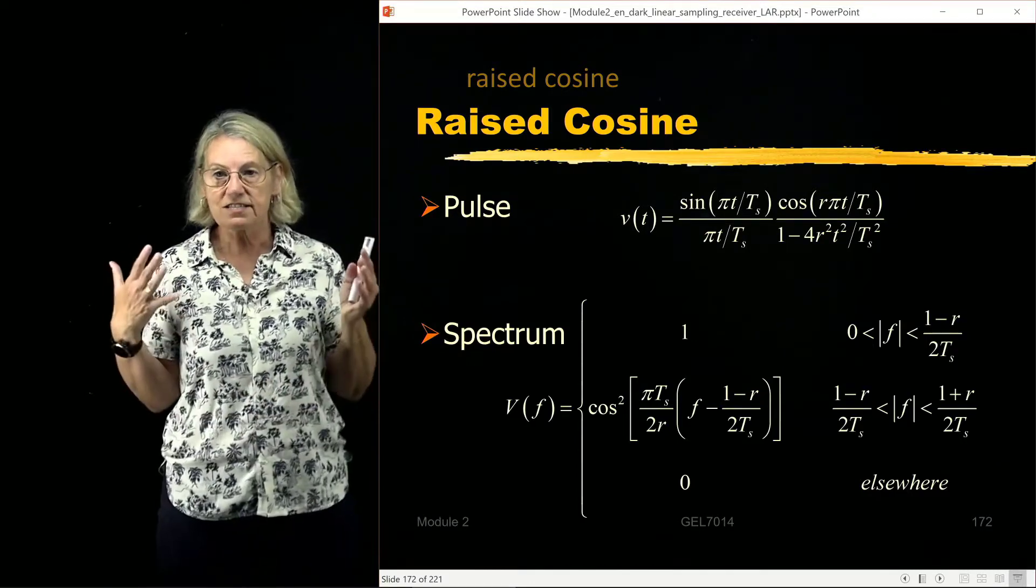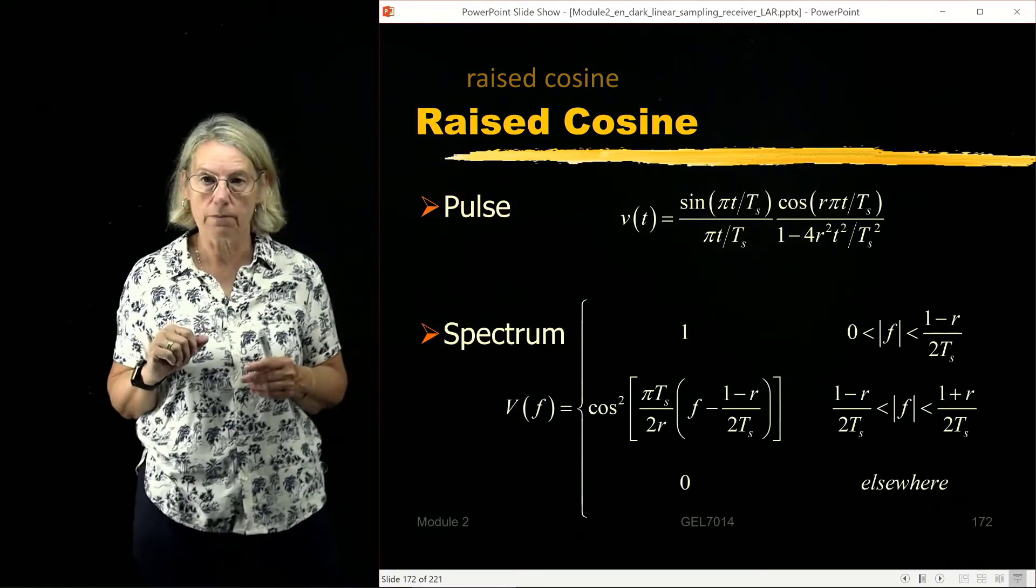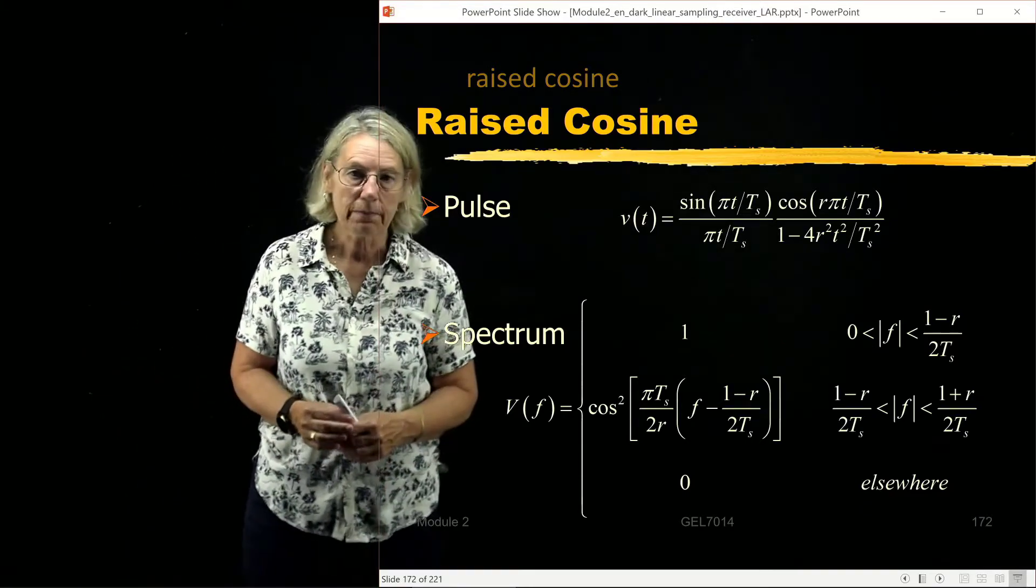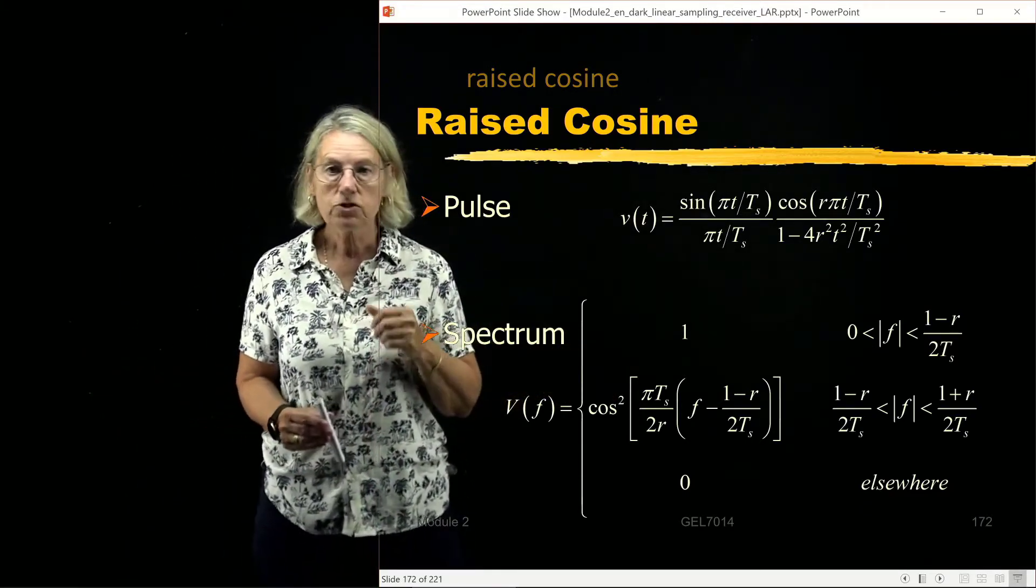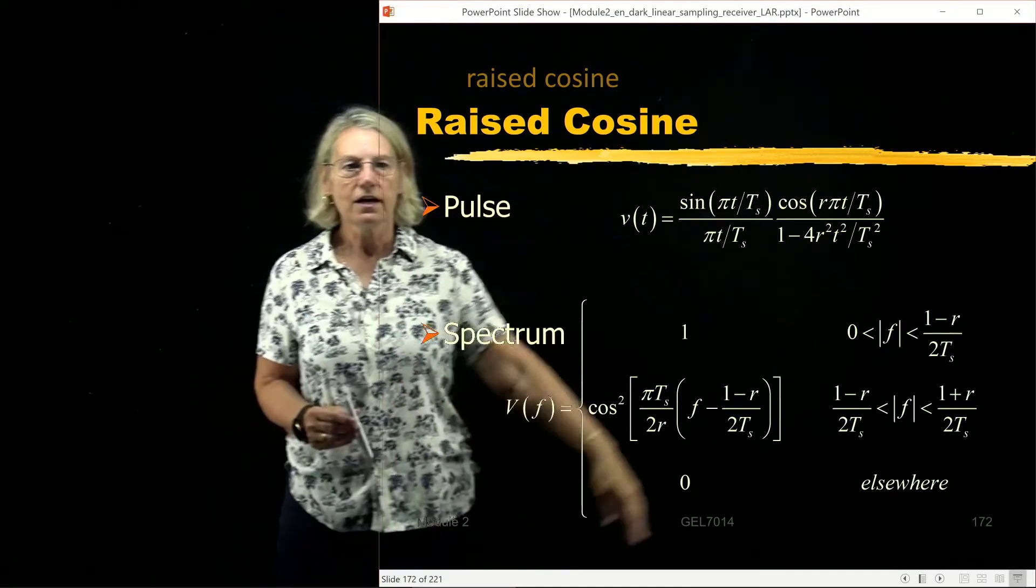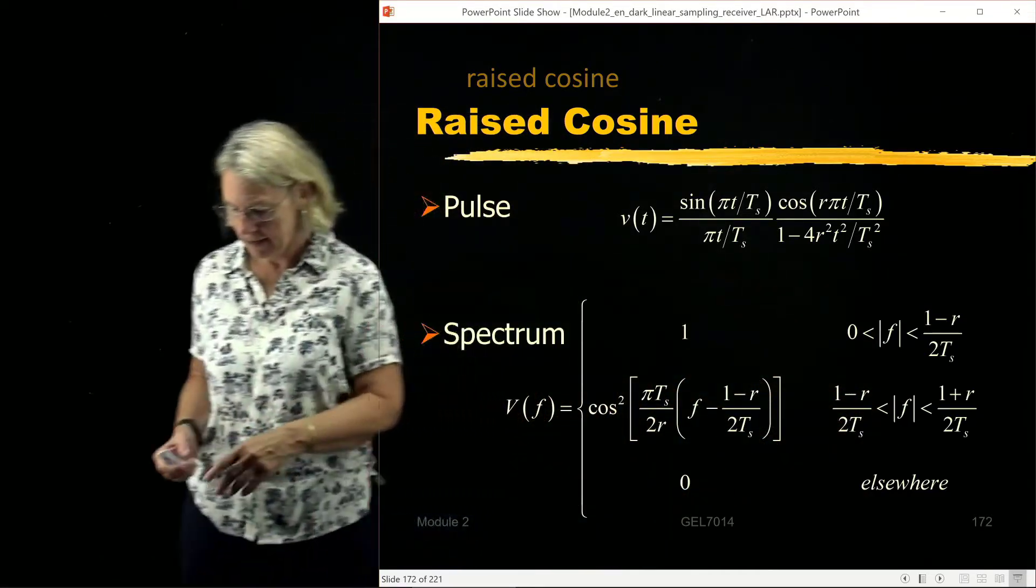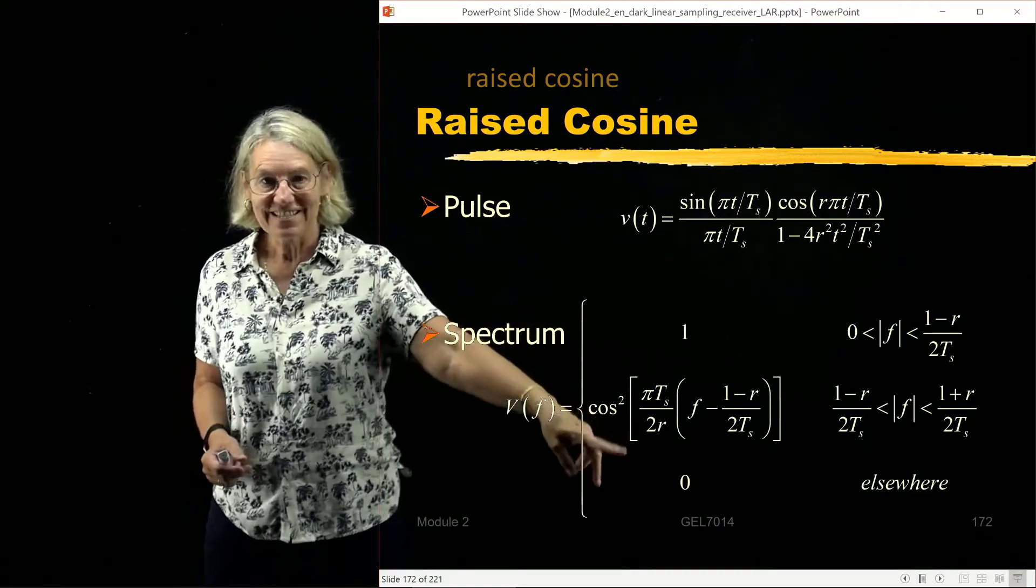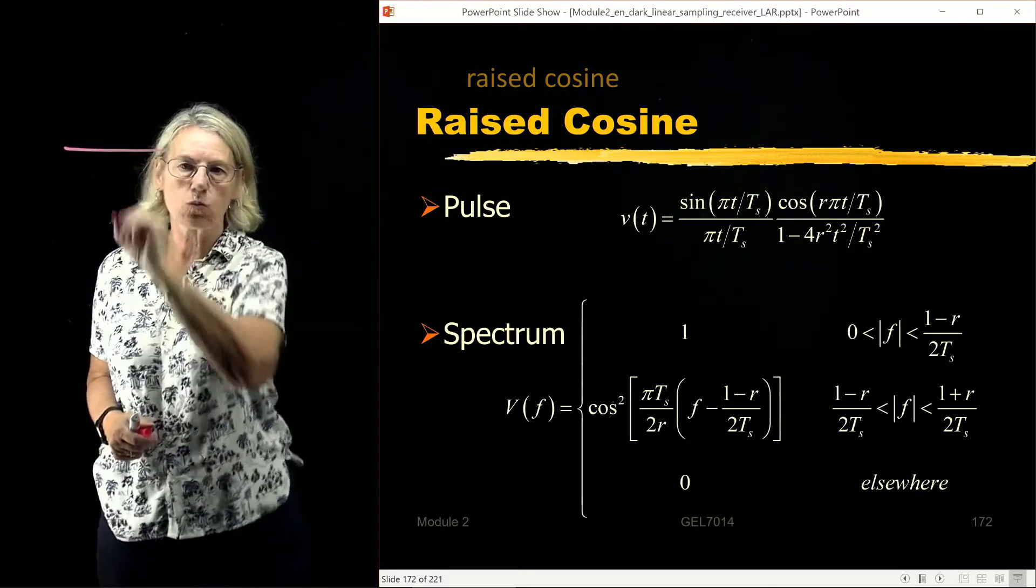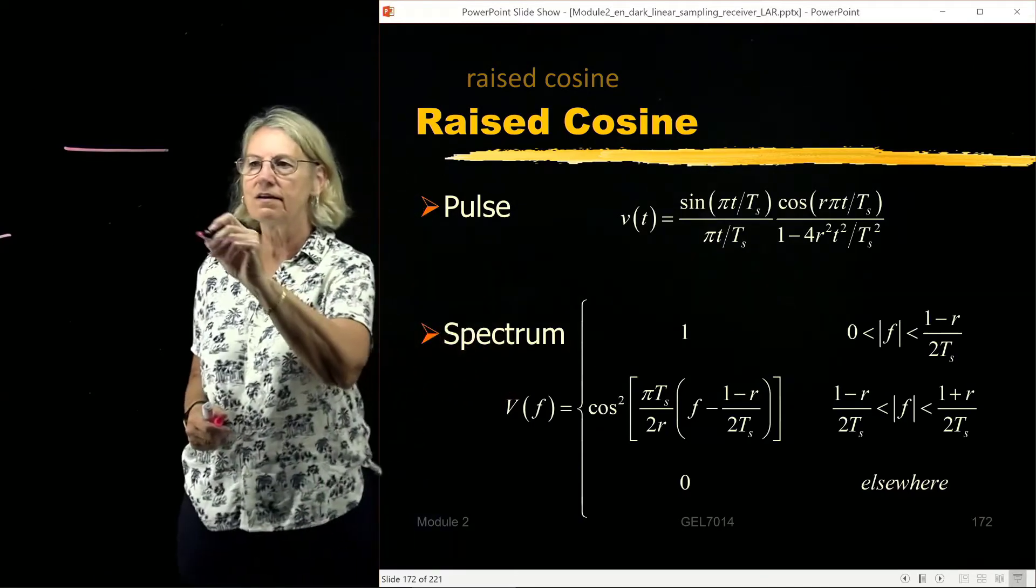Now if we take this definition of the raised cosine and we look for what is the Fourier transform, what is the frequency content of this, it has a very nice shape in the frequency domain. First of all, it is limited. It has a finite frequency support, so there's a certain frequency range for which it is non-zero. It sort of ramps up, so you can see there's a place where it's one, there's a place where it's zero, and then in between there's something going on.